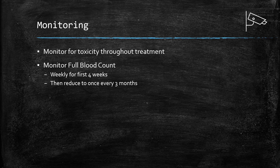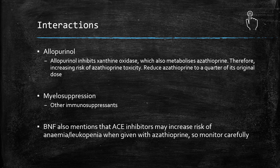You'd avoid azathioprine if liver function was very severely impaired, and likewise with kidney function - if it's very severely impaired you'd also avoid it, while if it's mildly impaired you could consider reducing the dose. In terms of interactions, we've touched on allopurinol and its inhibition of xanthine oxidase, which is one of the pathways of azathioprine metabolism. If xanthine oxidase is inhibited, azathioprine is in the body for a longer period at higher concentrations, and there's a risk of toxicity - deaths have been recorded with this interaction. Reduce azathioprine to a quarter of its original dose if using them together.